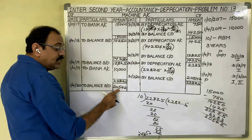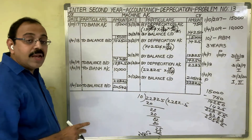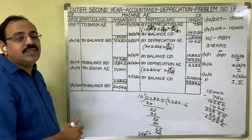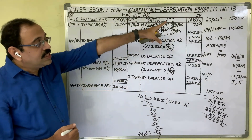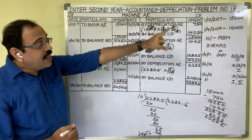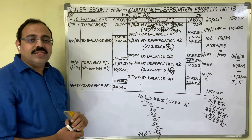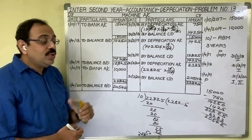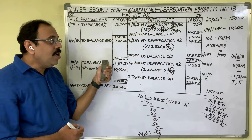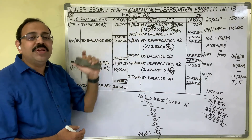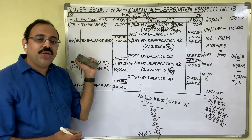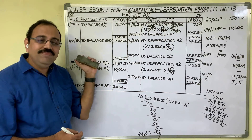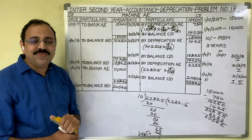So 20,542 is the opening balance of the two assets — the 15,000-rupee asset and the 10,000-rupee asset combined. This completes the 13th problem on depreciation. Hope this video is useful to you. Thank you.